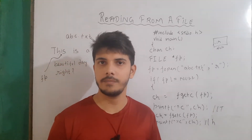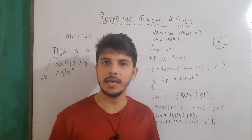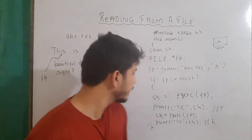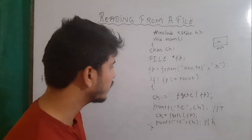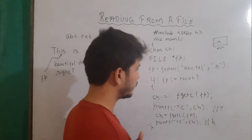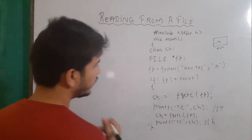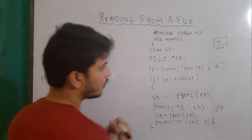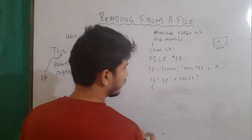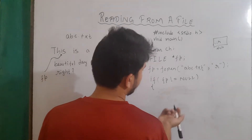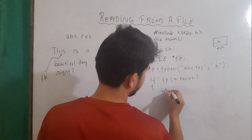But this is not a good approach. If the number of characters is a thousand, then I have to write these lines a thousand times. So instead of using these, we use a while loop — or we can say an infinite loop.